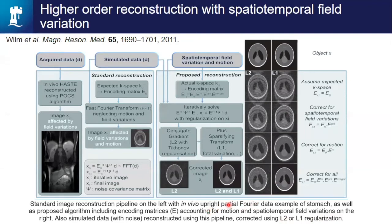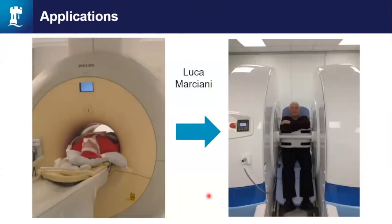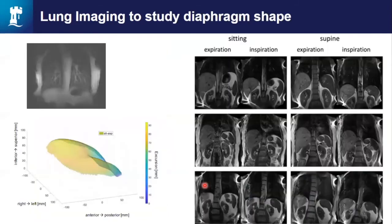In terms of applications, we've done a study looking at the lung diaphragm in expiration and inspiration, modeling the diaphragm as a 2D plane from multi-slice breath-hold data, studying changes between lying down and sitting up in healthy subjects and patients. There are changes between expiration and inspiration and between sitting and lying, though the differences between patients and controls weren't particularly massive.